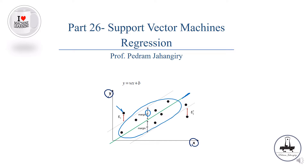What if some observations in the train set are not inside the margin? The algorithm is going to give them some slack, but at the same time it's going to penalize the objective function. So at the end of the day, we're going to come up with a hyperplane that will be our predictive engine.